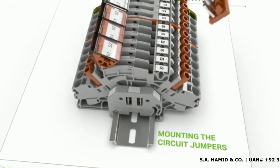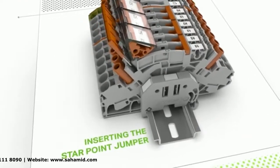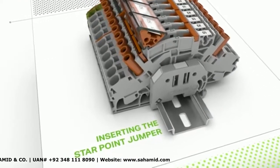Circuit jumpers can be fitted in the jumper slots located above. It is also possible to insert it as a star point jumper in the terminal block.